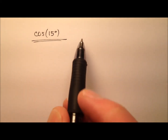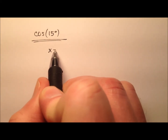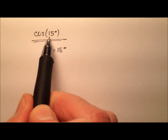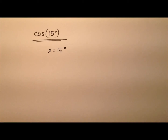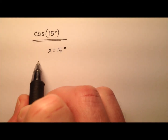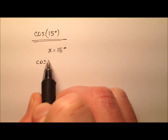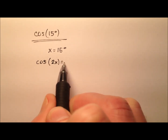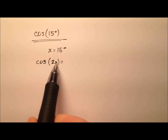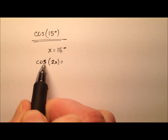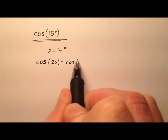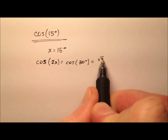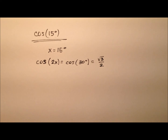So this first method — let's go ahead and start by saying x equals 15 degrees, because that's the value for which we're trying to find cosine. That means I can write a little equation here that says the cosine of twice x equals — well, two times 15 degrees is 30 — so we have the cosine of 30 degrees, which we know is a very standard value: the square root of three over two.